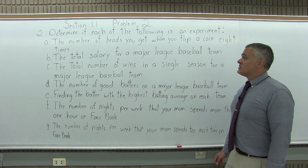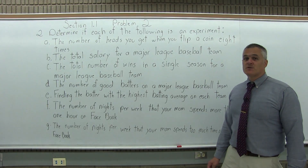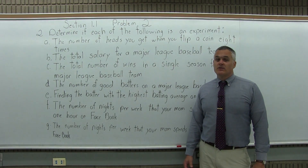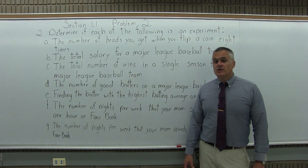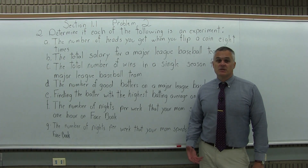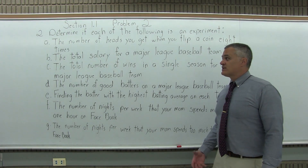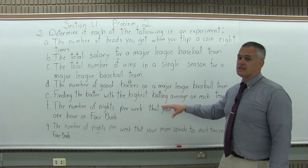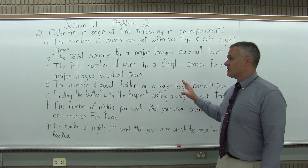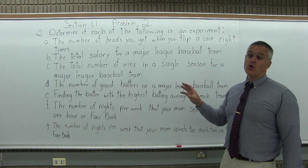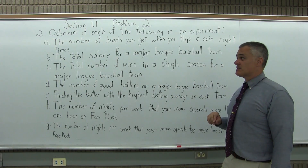It says: determine if each of the following is an experiment. To be an experiment, you need to have a well-defined outcome, which means the outcome is not an opinion. That's what we're going to consider as we look at the seven different things and see if they're an experiment or not.